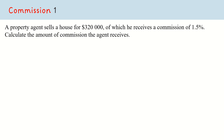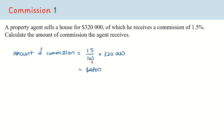Let us now take a look at commission questions. In this question, a property agent sells a house for $320,000, of which he receives a commission of 1.5%. We want to calculate the amount of commission the agent receives. The agent receives 1.5% of this amount, so we take 1.5 over 100 times $320,000, which gives us $4,800.